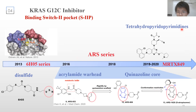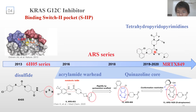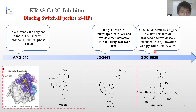As for MRTX-849, it has a tetrahydropyrido-pyrimidine scaffold, which is very different from the previous compounds. It shows superior pharmacokinetics and promising results in the clinic. AMG-510 (sotorasib) has extraordinary binding potency for KRAS G12C and is currently the only KRAS G12C selective inhibitor in clinical phase 3 trials.